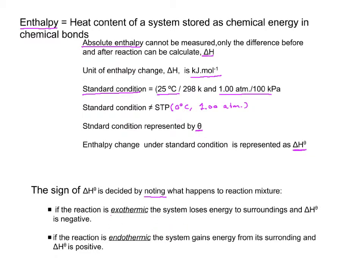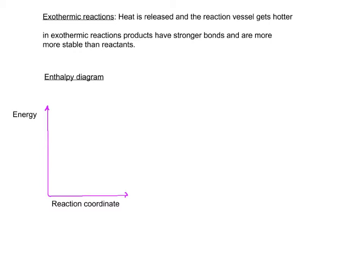Now let's look at exothermic reactions as the first set of examples. Exo is when the heat is released and the reaction vessel gets hot because that heat is coming out of the beaker, container, or the reaction vessel.